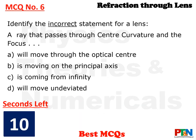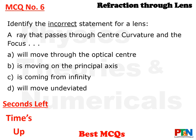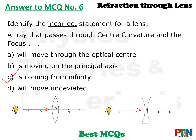Next MCQ. Identify the incorrect statement for a lens. A ray that passes through center of curvature and focus: option A — will move through the optical center; option B — is moving on the principal axis; option C — coming from infinity; option D — will move undivided. 10 seconds time. Time is up. The answer is option C. The ray need not come from infinity. There can be a point source as shown in the diagram. The ray is moving on the principal axis, passing through center of curvature and through focus, but it need not come from infinity.